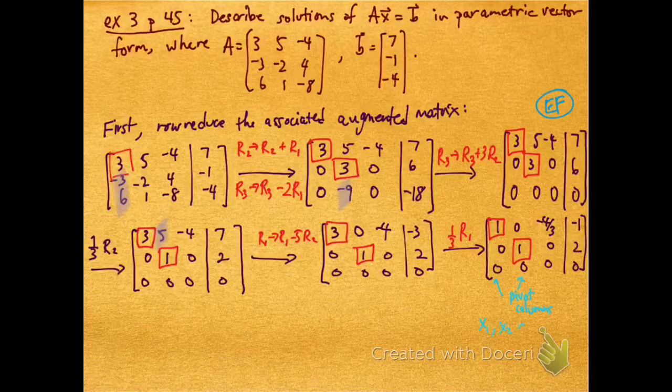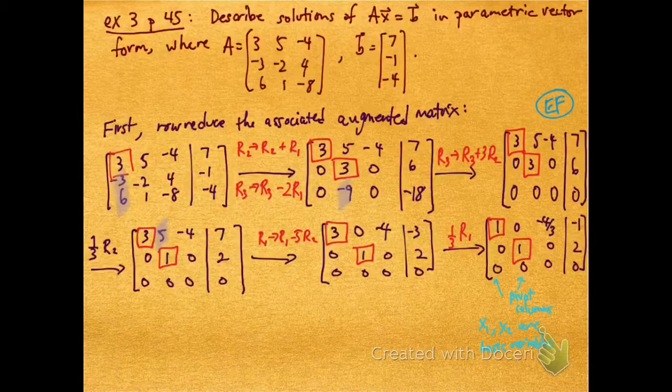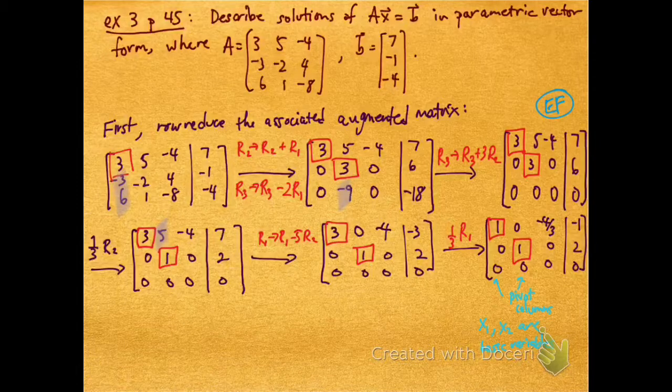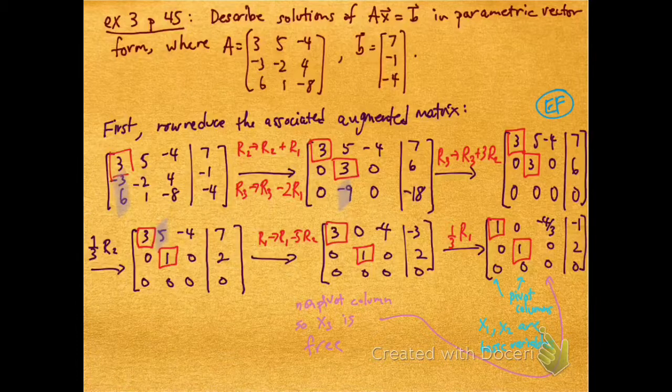And now this is in reduced echelon form, and I notice that the first two columns are pivot columns, which tells me x1 and x2 are basic variables. The last column, the third column, is a non-pivot column, so it tells me x3 is free.